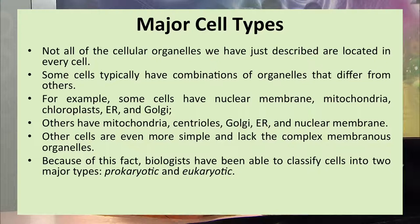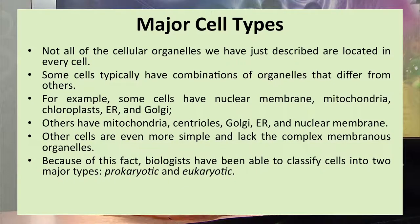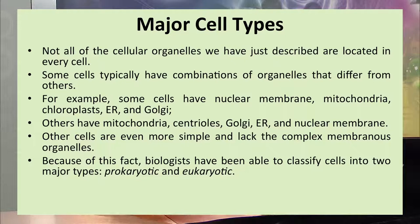There are cellular organelles present in every cell, but not every organelle is present in each kind of cell. Some cells have some combination of organelles — some may have chloroplast, mitochondria, endoplasmic reticulum, and Golgi body. Other cells may have mitochondria, centriole, Golgi, endoplasmic reticulum, and nuclear membrane. Some cells are simpler and lack complex membranous organelles.